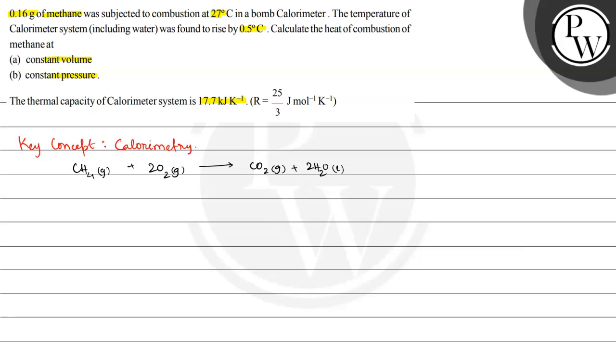Given is 0.16 gram of methane subjected to combustion. Number of moles equals 0.16 gram divided by methane's molar mass, 16 g/mol. This equals 0.16 divided by 16, which is 0.01 moles. So the number of moles is 0.01.